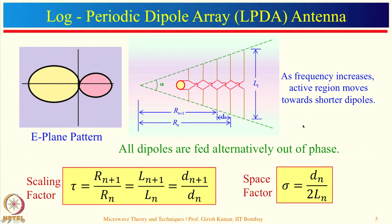In a log periodic antenna, all the dipoles are fed. As frequency increases, the active region shifts towards the smaller dipole, because at higher frequency a smaller dipole acts as the resonant length. So at the lowest frequency the largest dipole is resonant; as frequency increases, progressively smaller dipoles become resonant.